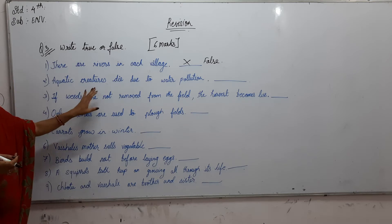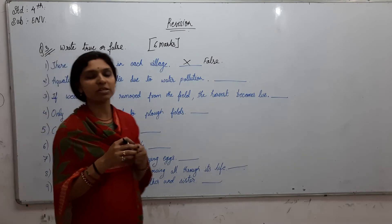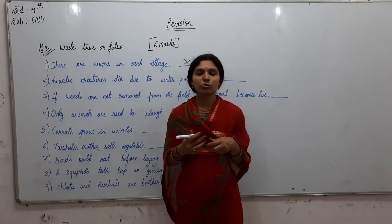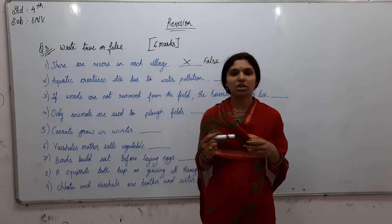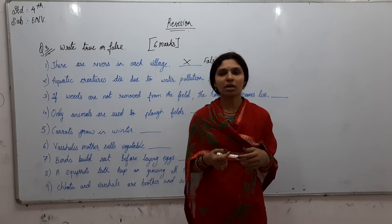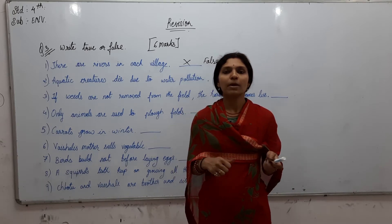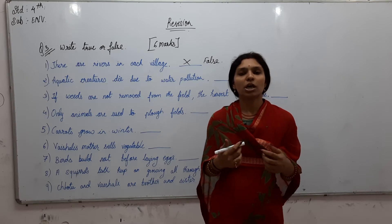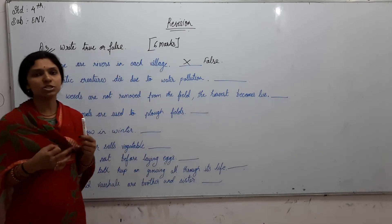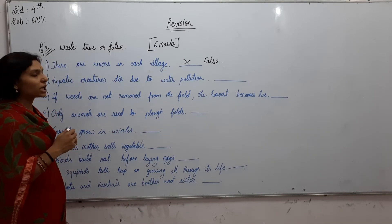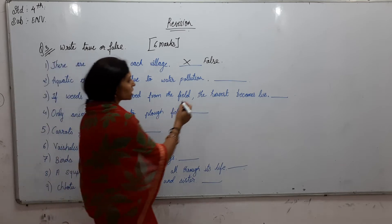Next: 'Aquatic creatures die due to water pollution.' We read in the chapter 'River's Journey' that the river originally starts from the mountain where there were many fishes. But as the river journeyed to the city where industrial areas and buildings are located, the aquatic life became completely zero. So, aquatic creatures do die due to water pollution — it is True.